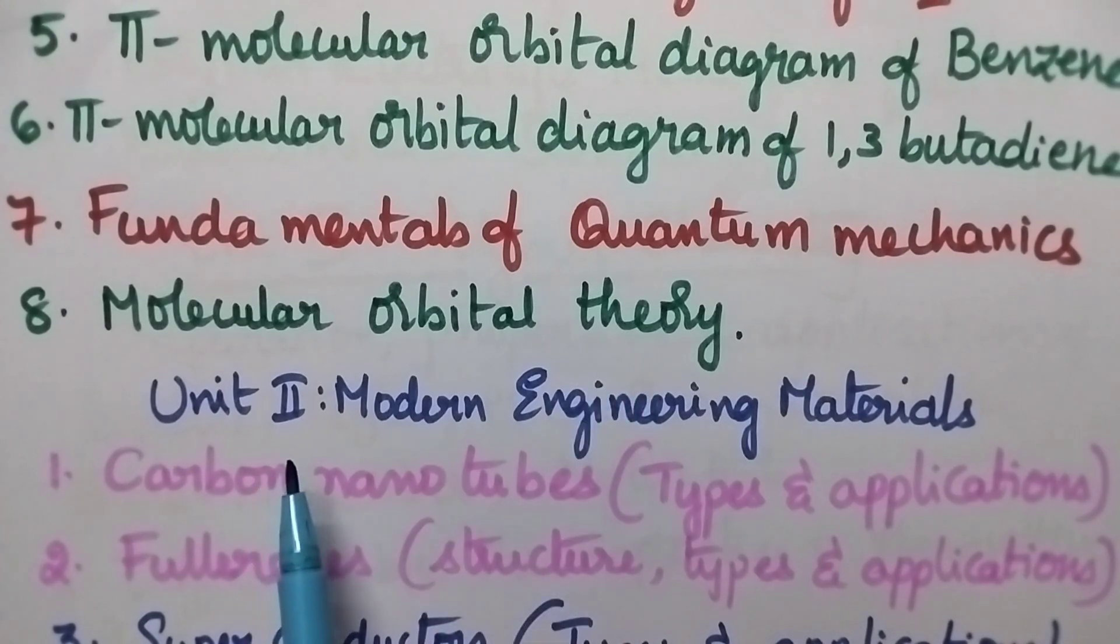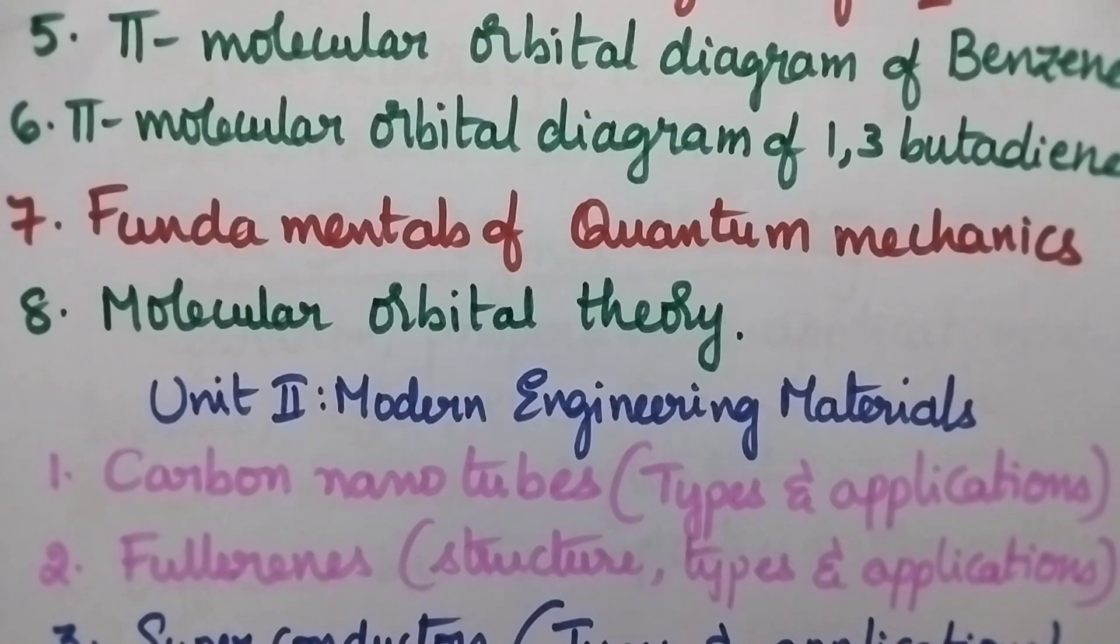Coming to unit 2, it is known as modern engineering materials. Important questions include carbon nanotubes. With respect to carbon nanotubes, types, properties and applications are very important. Fullerenes, structure, types, properties and applications.